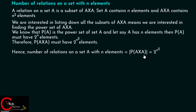Up to now, we have understood what a relation is. We have seen how to define a relation from a set A to set B, and also how to define a relation from a set to itself. We have seen that the number of relations on a set A with n elements is 2 to the power n squared, because A cross A has n squared elements and the power set of A cross A has 2 to the power n squared elements.